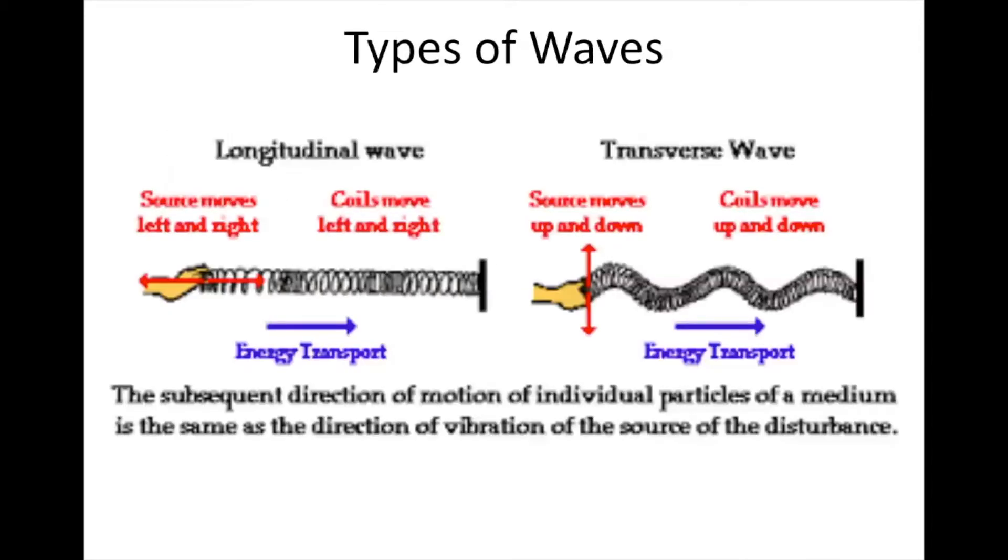The two types of waves are longitudinal and transverse. You can tell them apart based on how you would create them using a slinky. For a longitudinal wave, you'd move your hand left and right. This would create sections of high pressure and low pressure in the slinky. That pressure wave would travel to the right, and so the source moves left and right, the coils move left and right, and energy transport is in the same direction as the vibration that caused it. We call that a longitudinal wave.